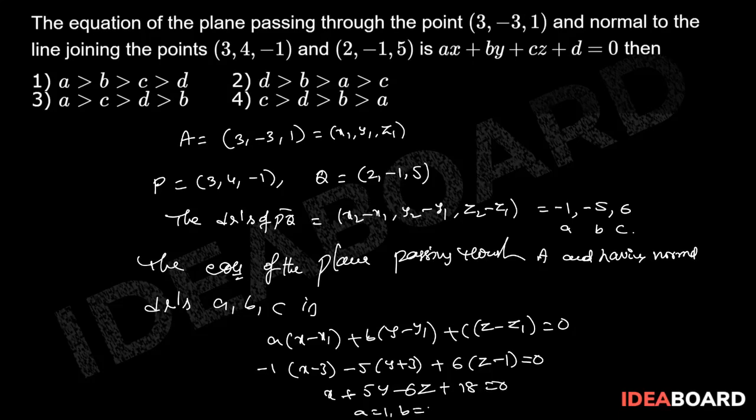A = 1, B = 5, C = -6, D = 18. Here least value is C. The correct answer is second option.